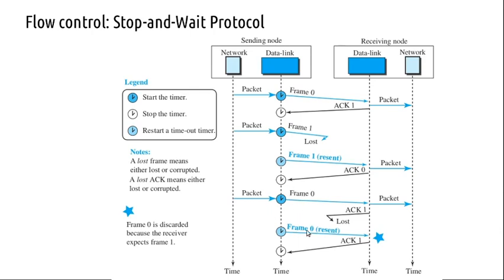Each frame contains different data — frame 0 and frame 1 — only the sequence numbers vary. TCP, the Transmission Control Protocol, uses a similar format with sequence numbers, not just zeros and ones but more complex sequence numbers, which we will see later. These are used to keep track of data frames being sent so that there will be no loss or duplication.